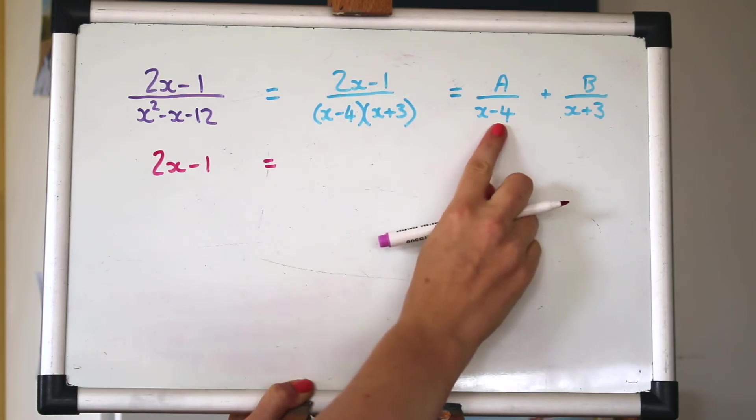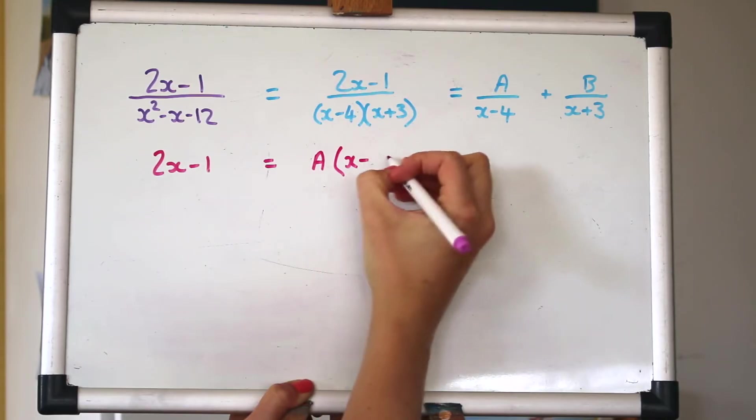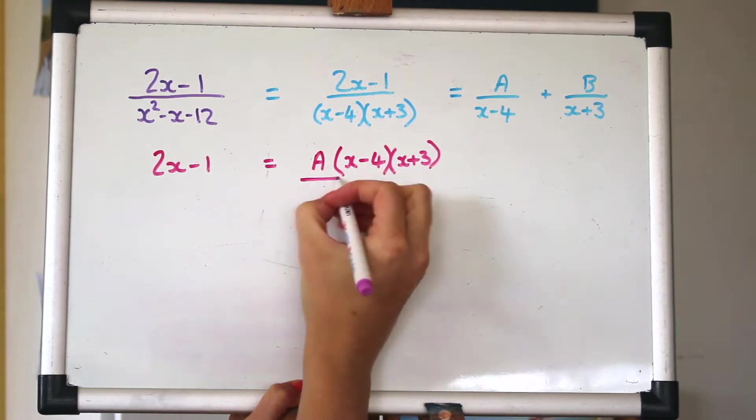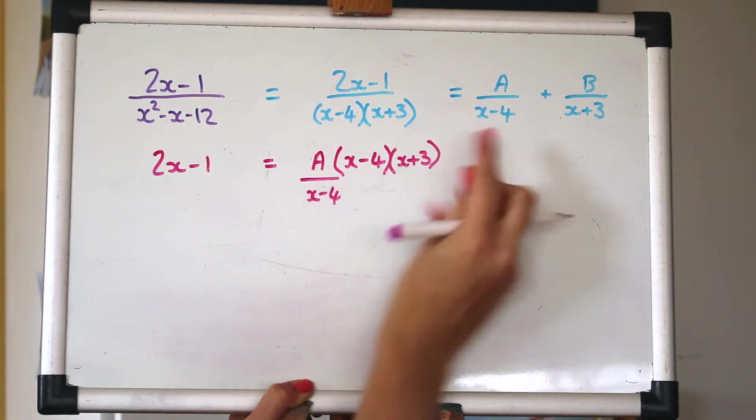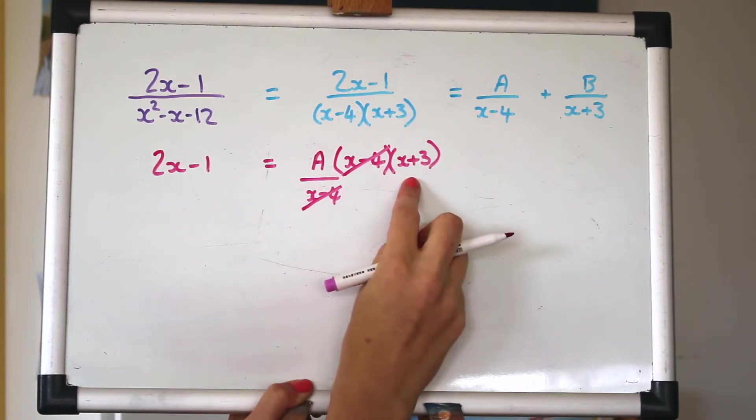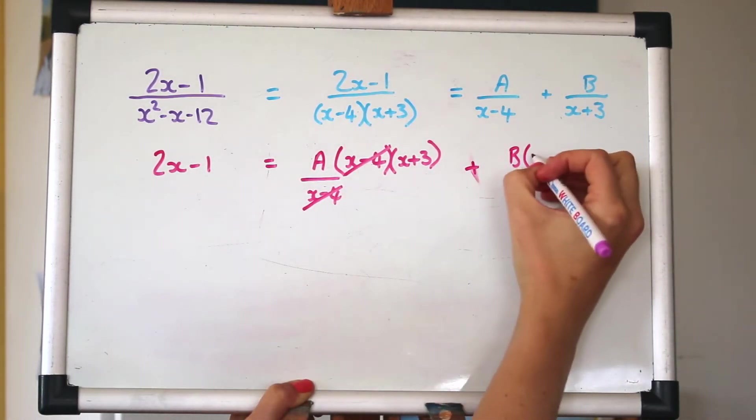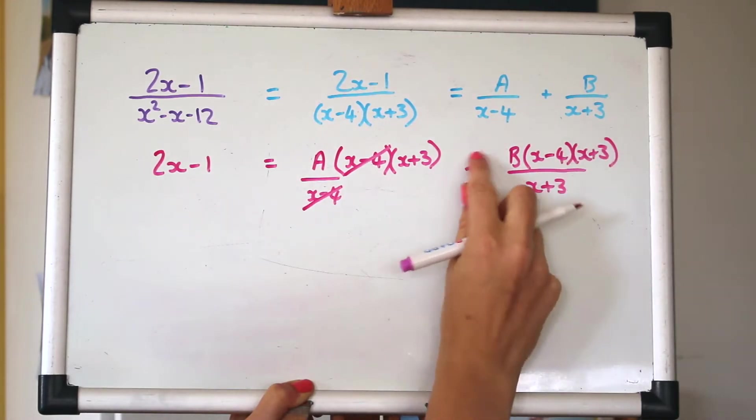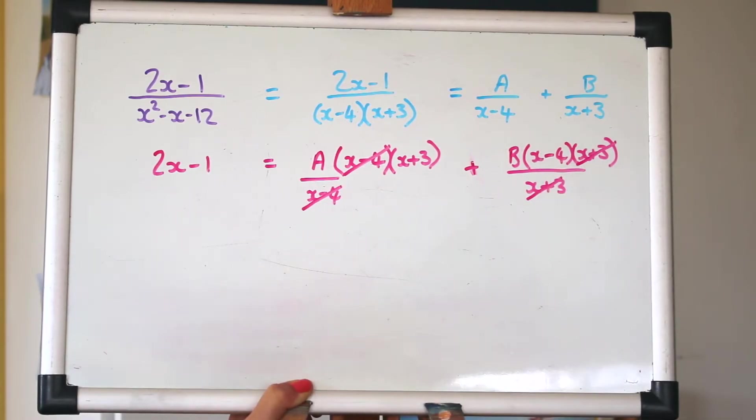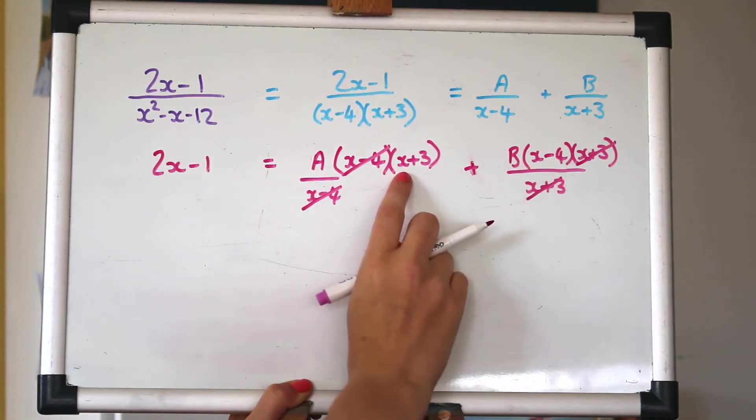When we multiply this right hand side, I'm just going to walk you through it in two steps. If we multiply by all of that and we've got x minus 4 on the bottom there, this first fraction, then notice the x minus 4 will cancel on the top and the bottom. So we'll just be left with the x plus 3. And similarly, for this fraction, we'll cancel out the x plus 3 and just be left with x minus 4. So for all the others, I'm just going to go straight to this step of writing that other bracket on the top.